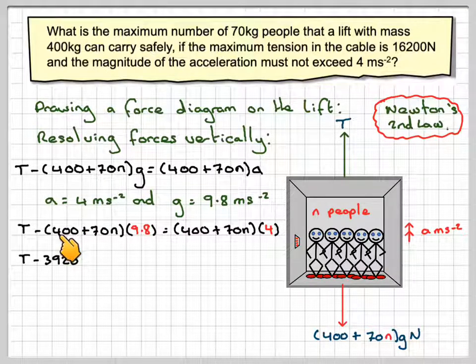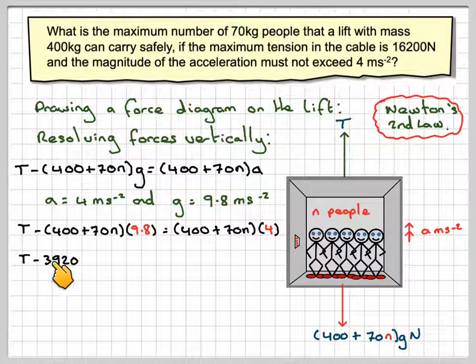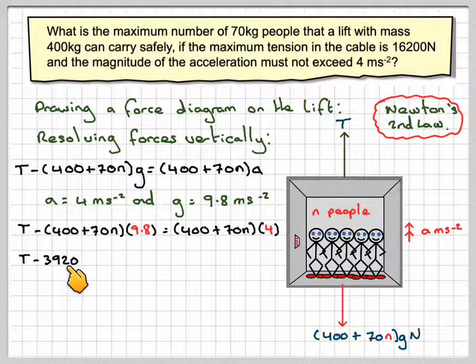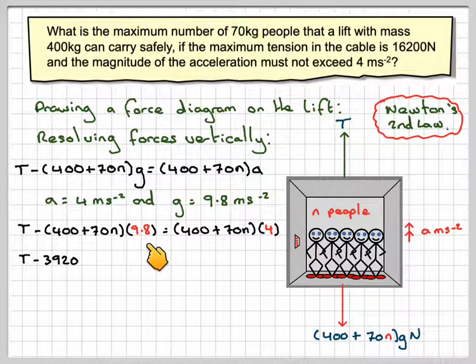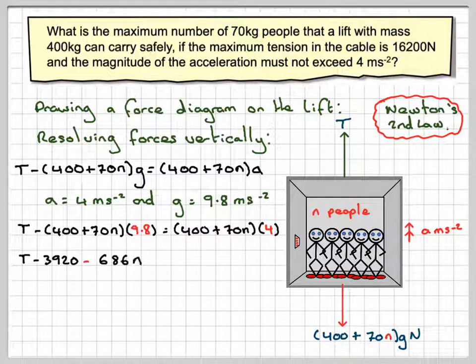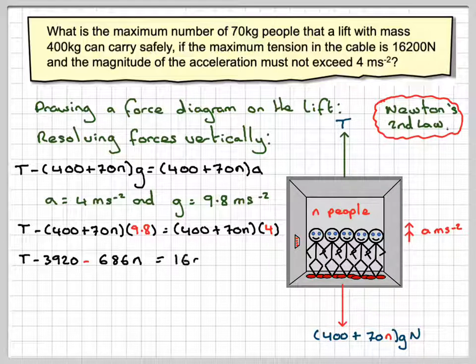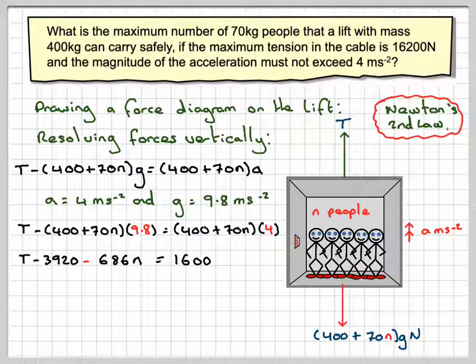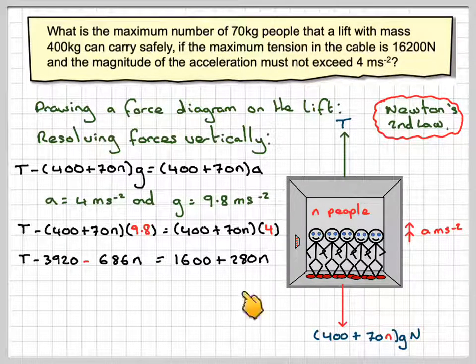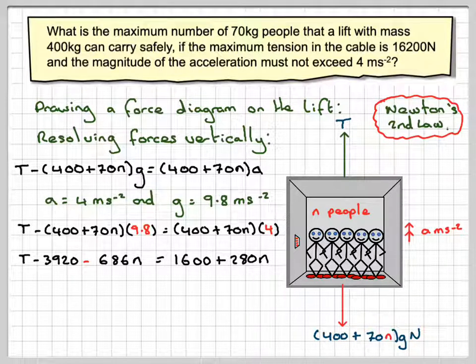Now expanding carefully, so we've got T, 9.8 times 400 is 3,920, and then this will come minus 686N is going to be equal to 1,600 plus 280N.